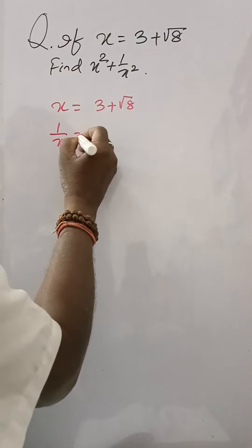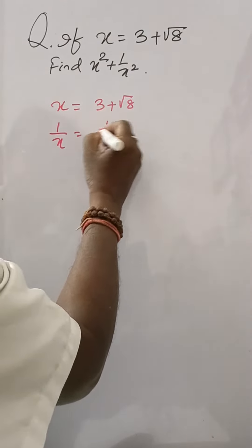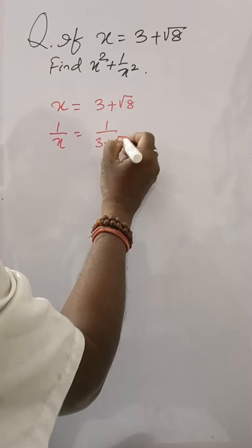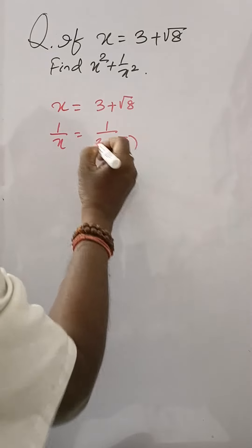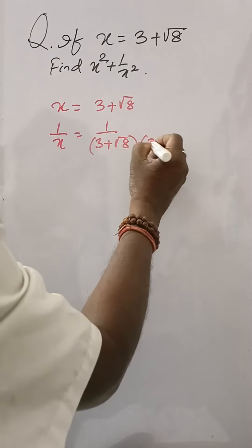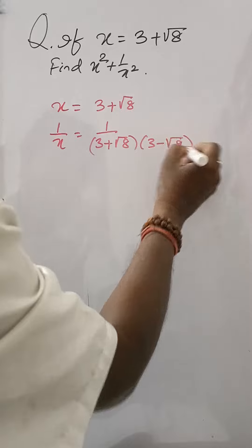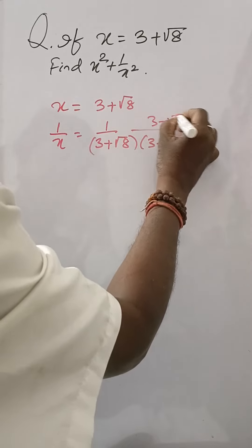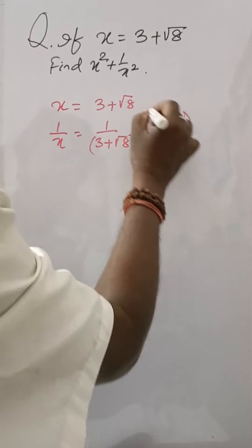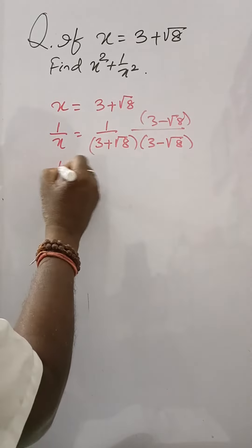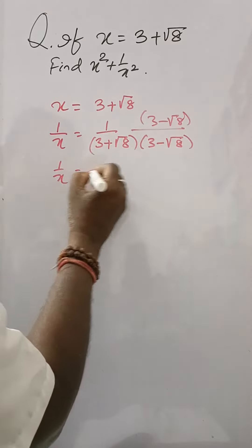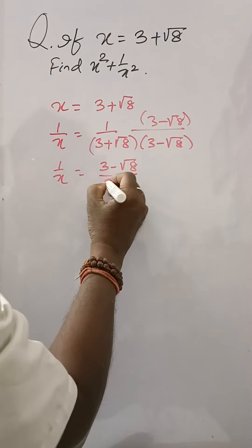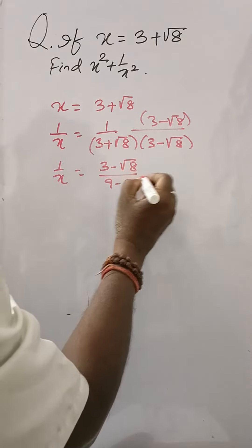1 by x is equal to 1 by 3 plus under root 8. Rationalizing this: multiply by 3 minus under root 8. So 1 by x is equal to 3 minus under root 8 by 9 minus 8, which gives 3 minus under root 8.